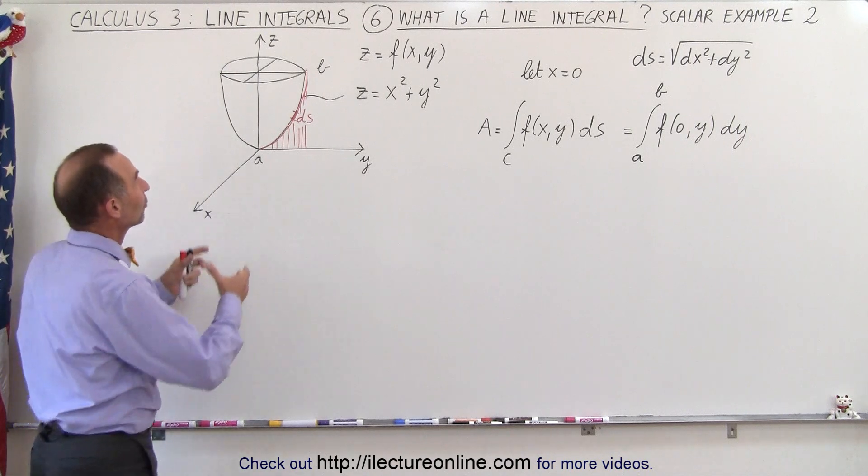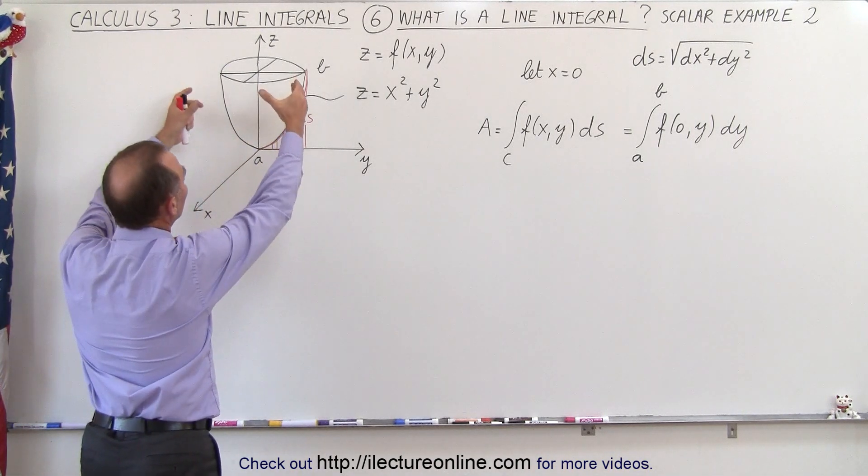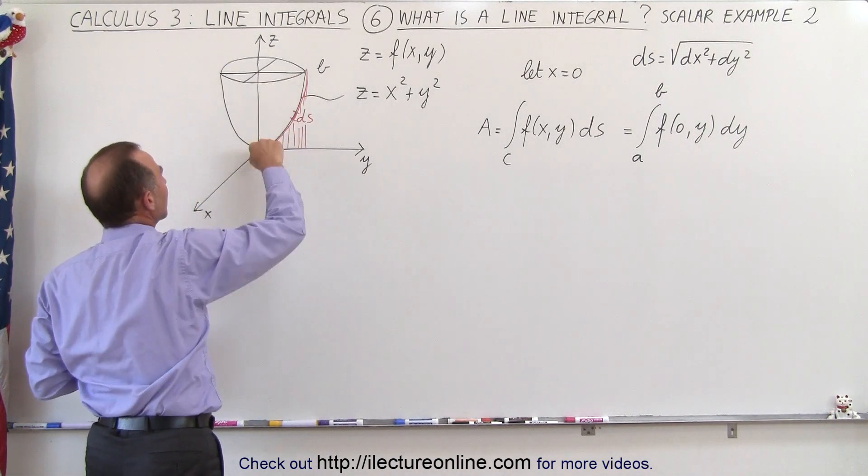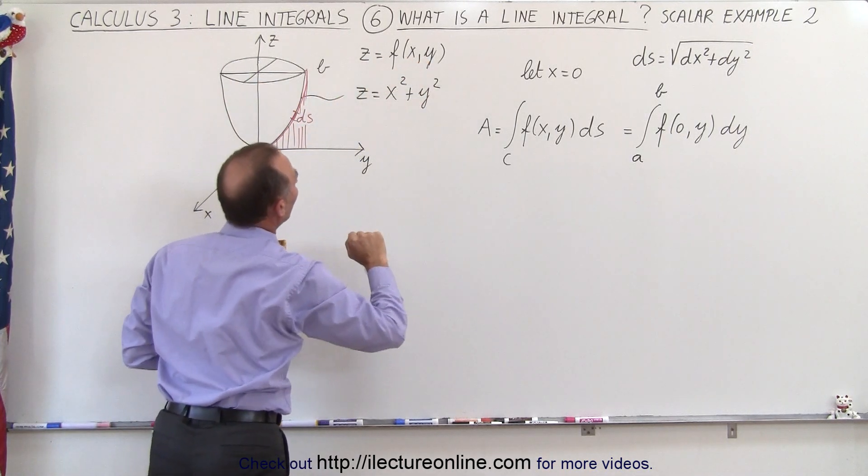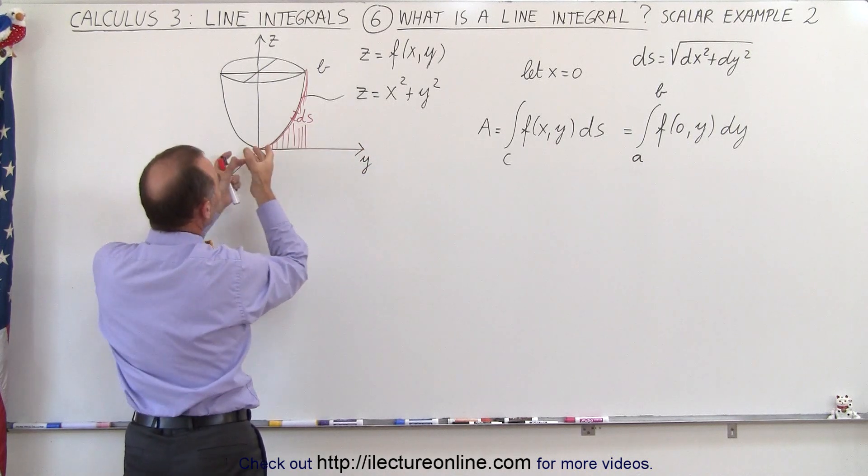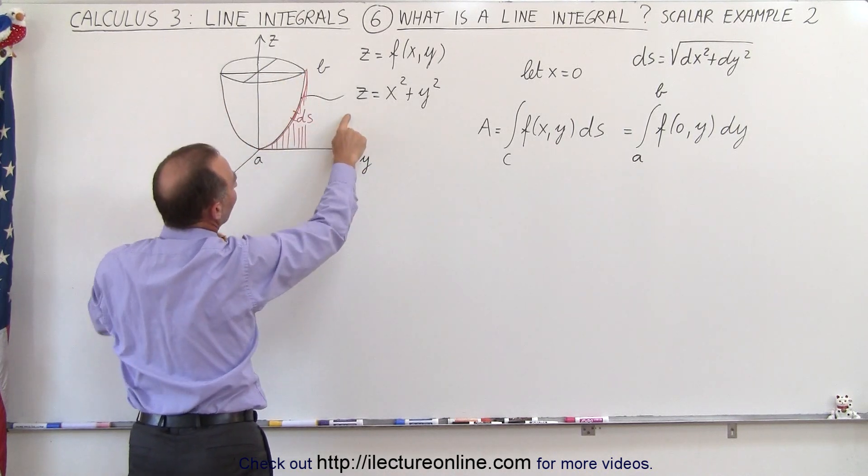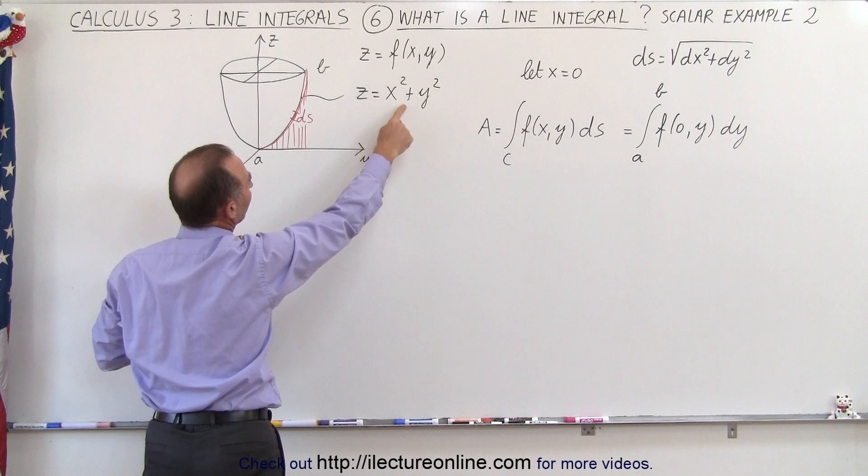What we're going to do here is take a look at this paraboloid. We can see that the height here in the z direction depends upon the values of x and y, so z is a function of x and y. The surface of that paraboloid can be defined as z equals x squared plus y squared.